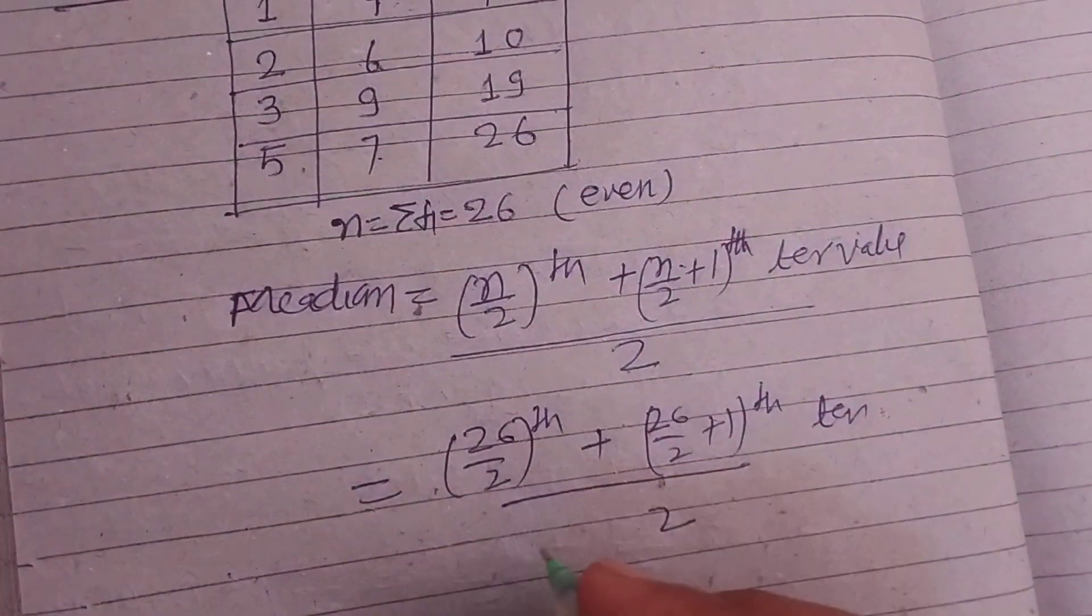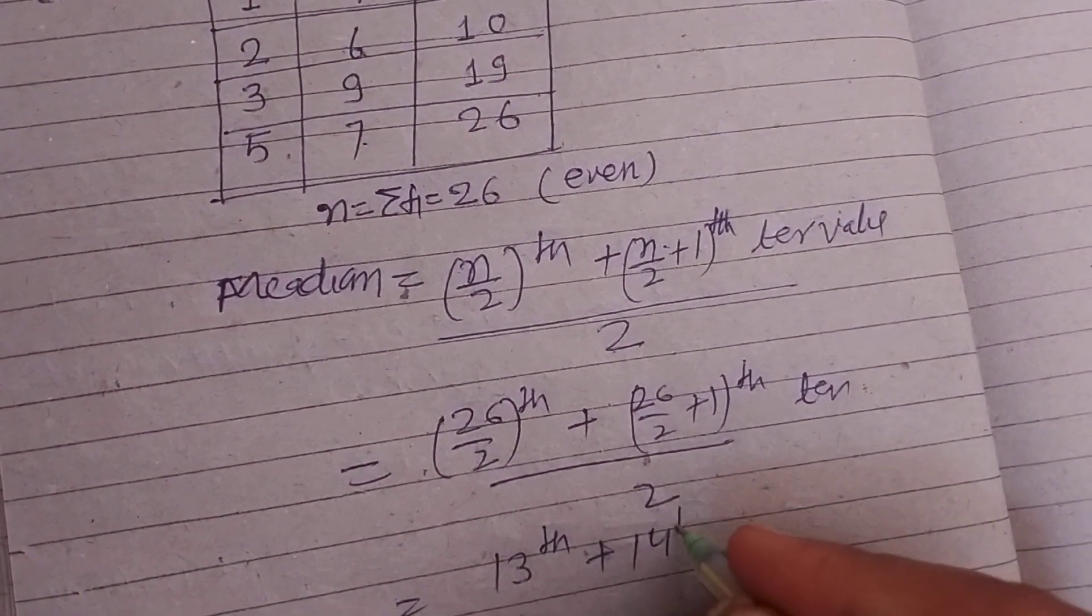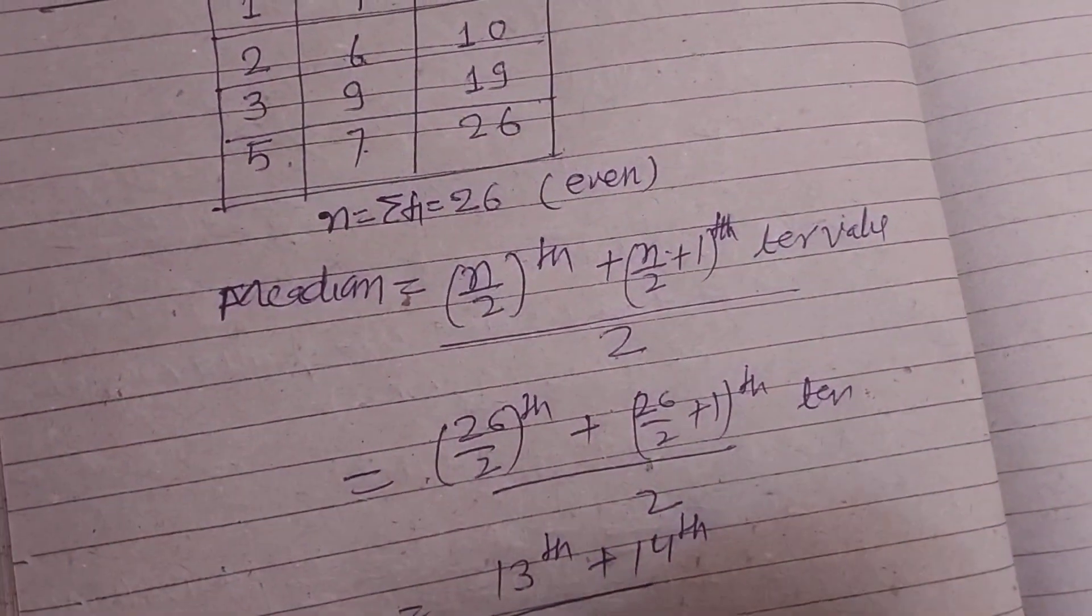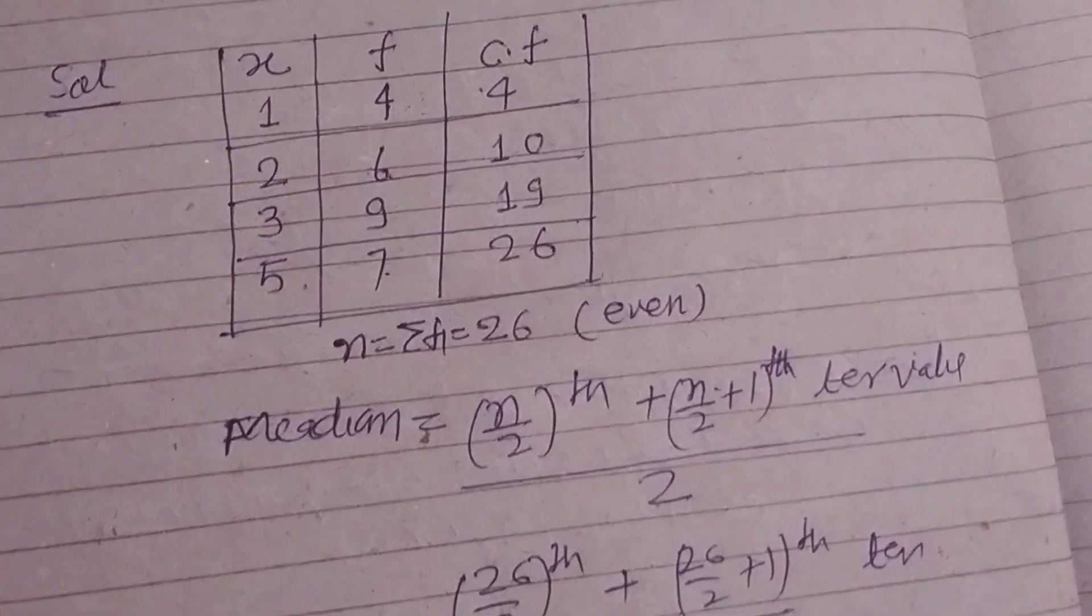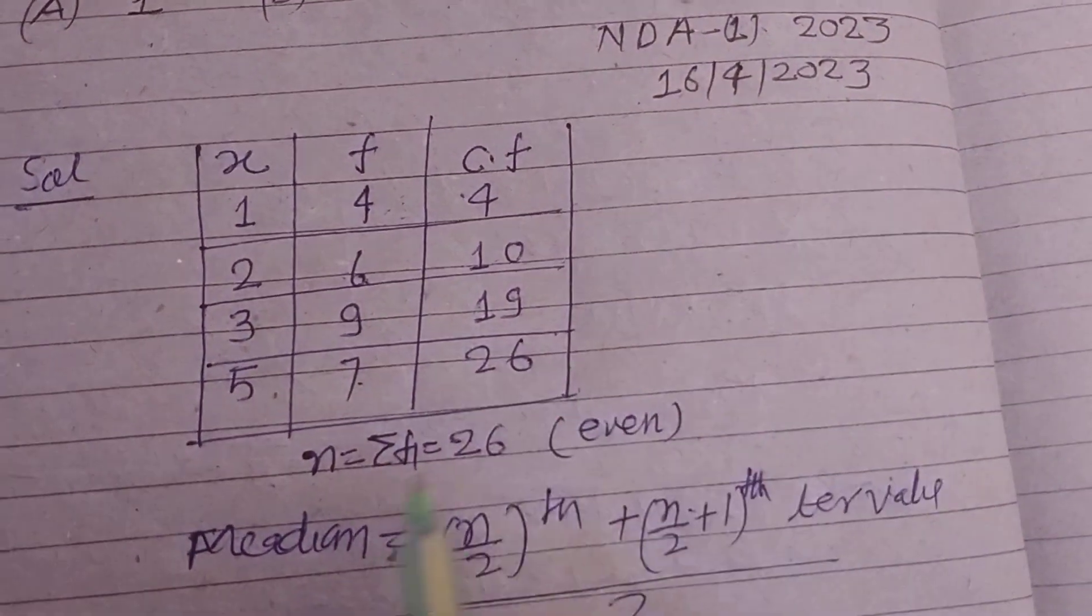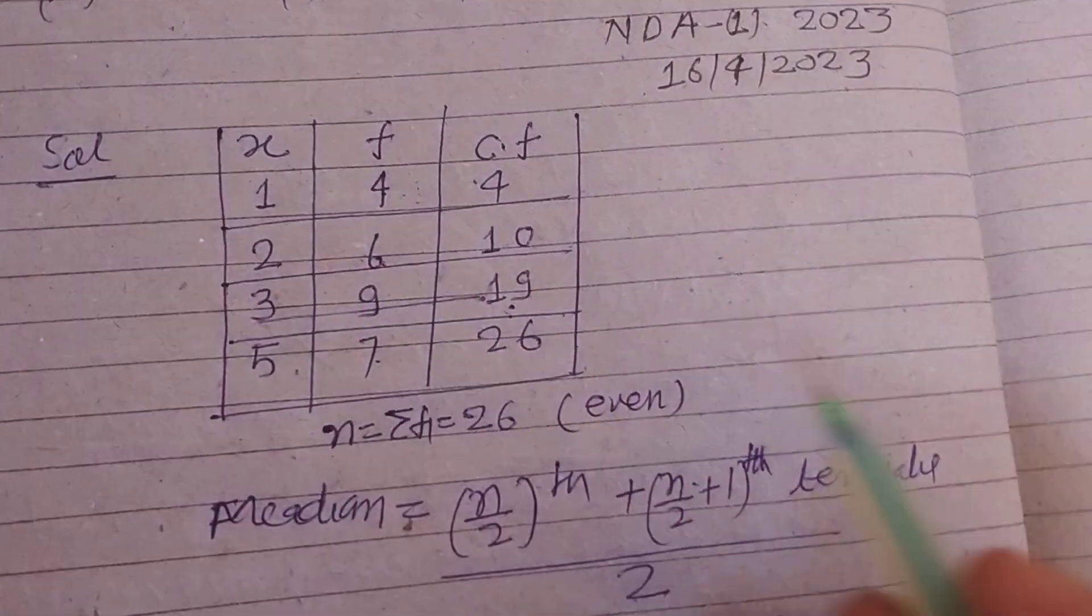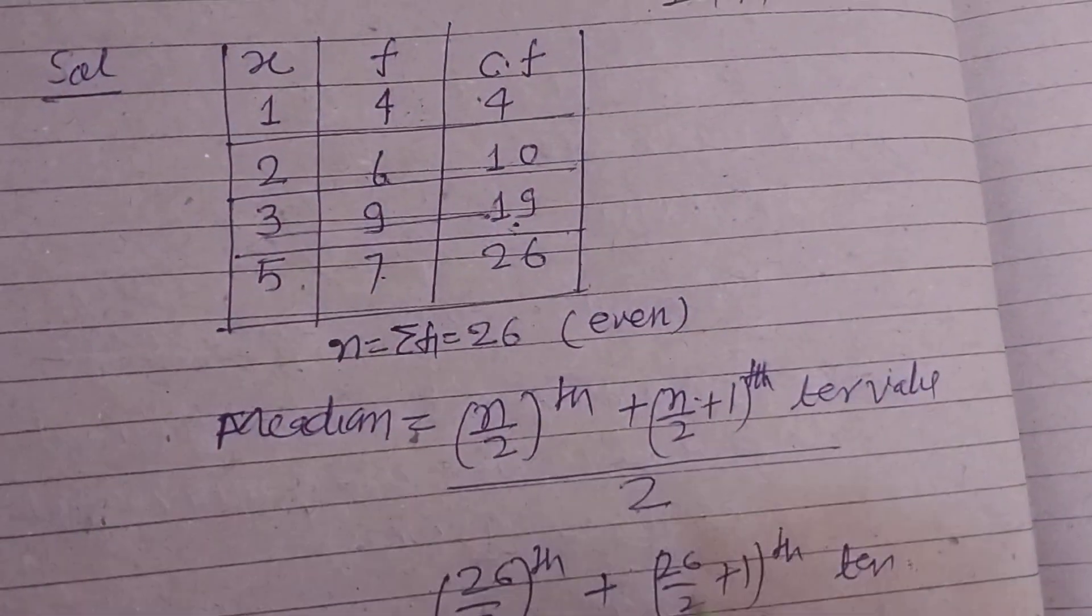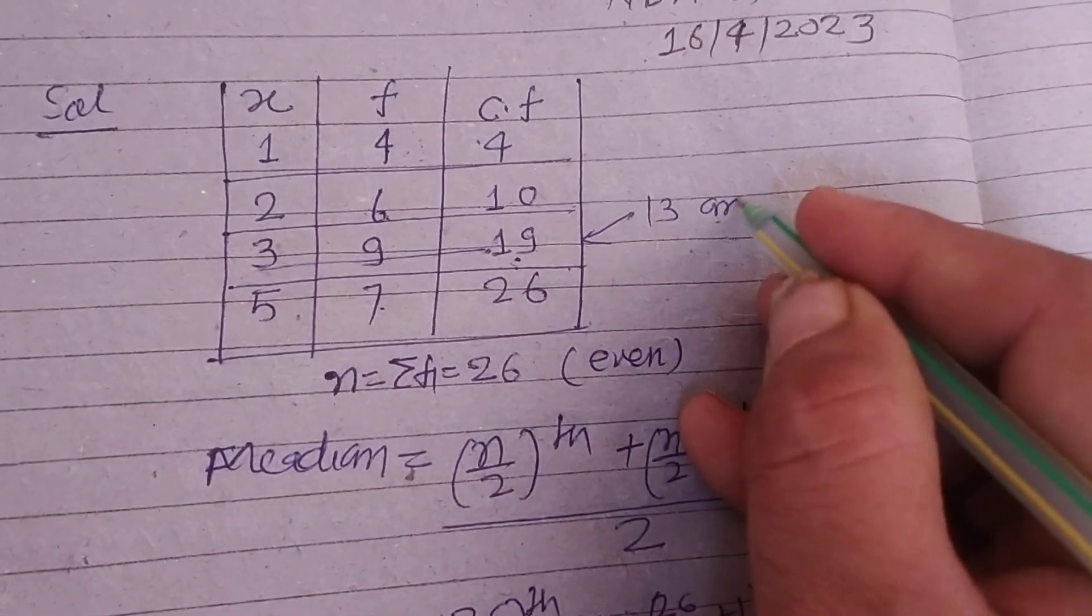This is the 13th term plus 14th term, divided by 2. In the cumulative frequency, the 13th term lies under 19, so this is 3. The 14th term also lies between 13 and 14, so the value is also 3.